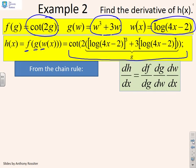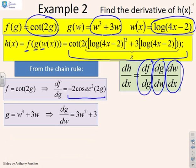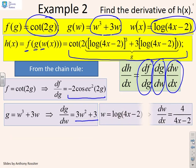The chain rule tells us that dh/dx is df/dg times dg/dw times dw/dx. So let's do each in turn. f is cot 2g, and df/dg is minus 2 cosec squared 2g. g is w cubed plus 3w, so dg/dw is 3w squared plus 3. And w is log of 4x minus 2, so dw/dx is 4 over 4x minus 2. You'll notice that each of these derivatives is relatively straightforward. The fact that this expression up here looked pretty horrendous isn't a problem in terms of the differentiations that I have to carry out.